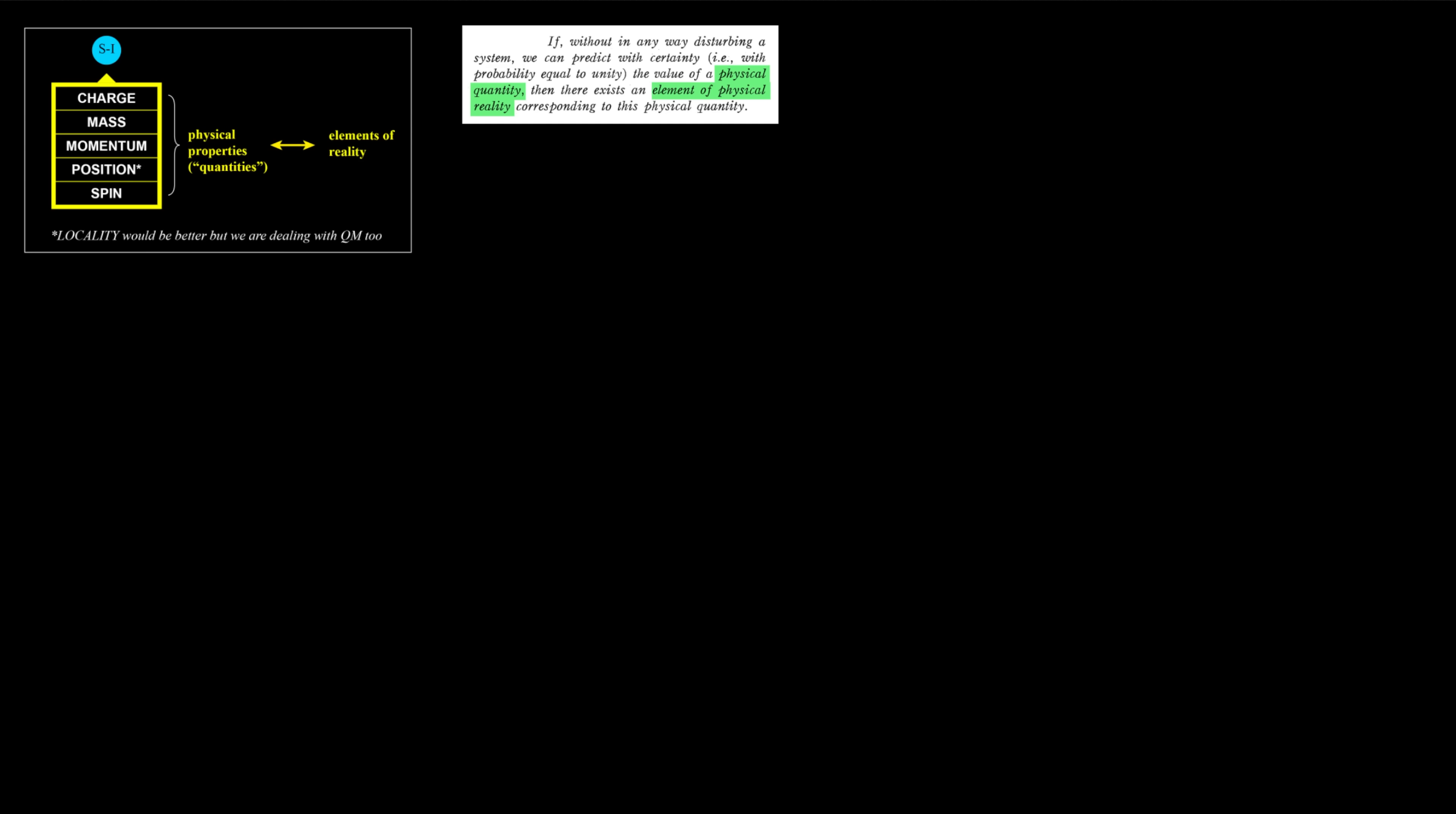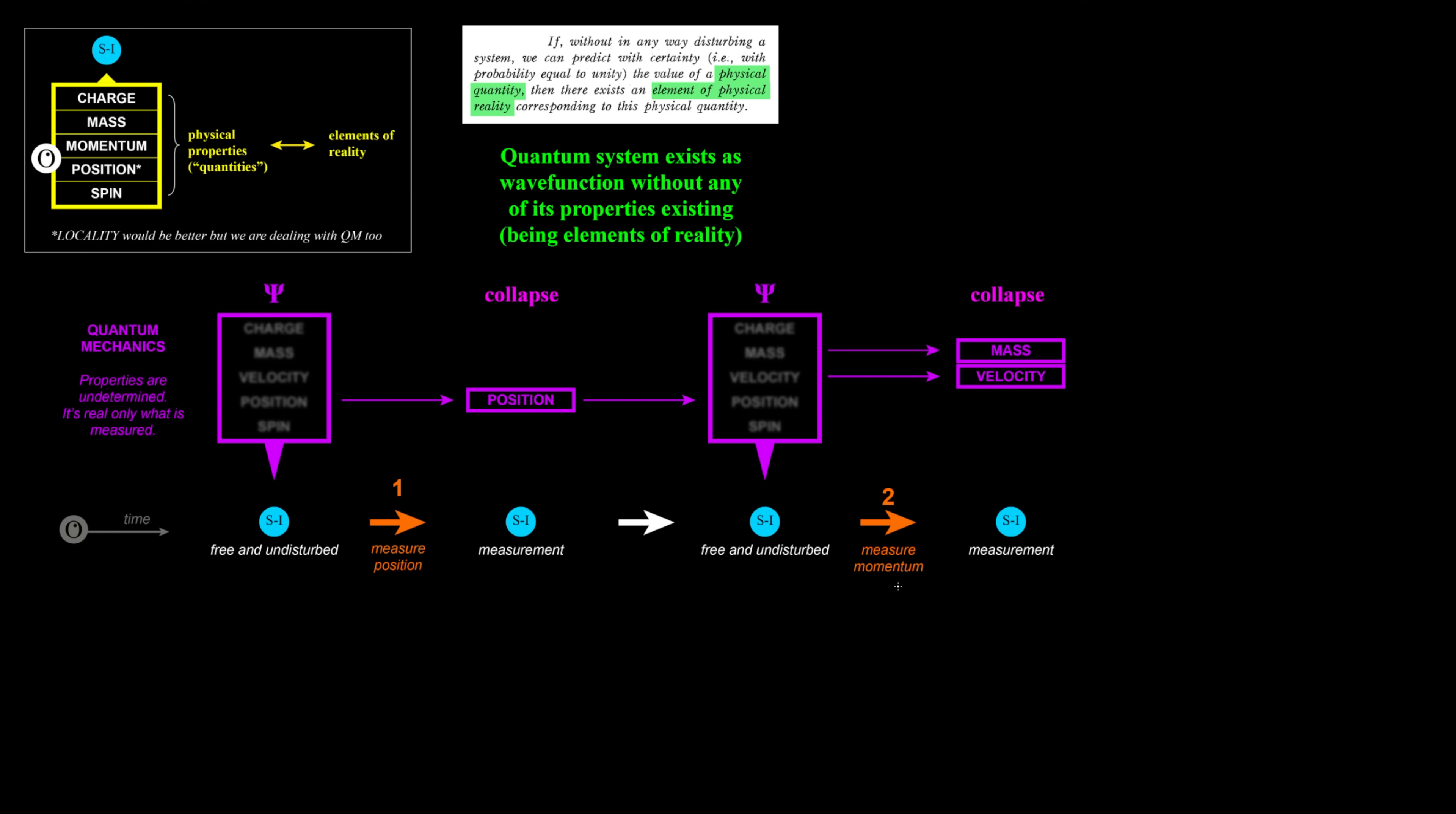We consider a generic system to which we assign some properties. It is experimentally possible to measure such values in the system, so for each physical property we have an element of physical reality. These are the two relative conjugated values we are going to analyze. The wave function contains all the mentioned properties, but none of these values is an element of reality. It follows that a quantum system exists as wave function without any of its properties existing. I now measure its position and this causes the collapse of the wave function. Position becomes an element of reality, but after the measurement the system is again undefined as wave function. If now I want to measure its momentum, mass and velocity becomes real.